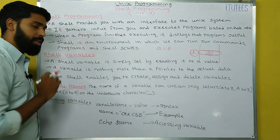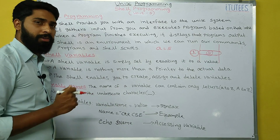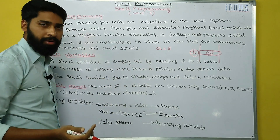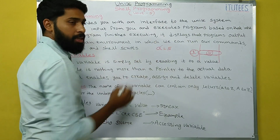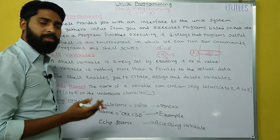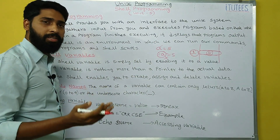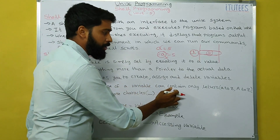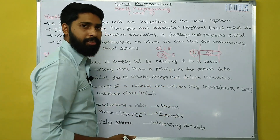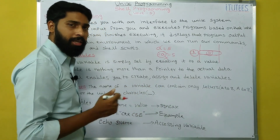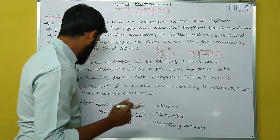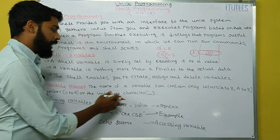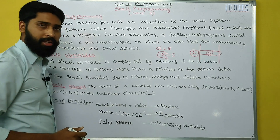Variable names: how are you going to give variable names? For example, a equals to 5, so the variable name is a. When giving variable names, we follow certain rules. The name of a variable can contain only letters — small a to z and capital A to Z — and numbers 0 to 9, or the underscore character.